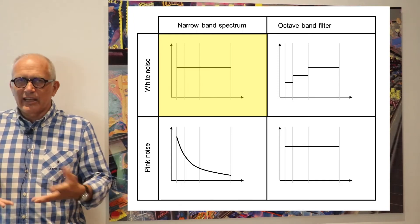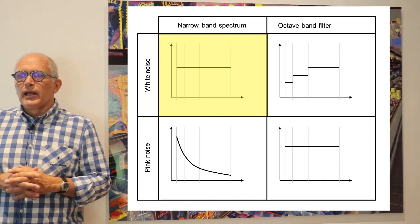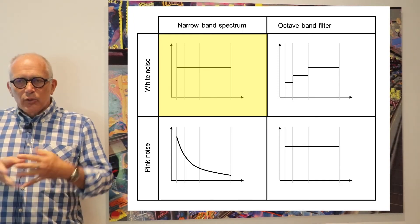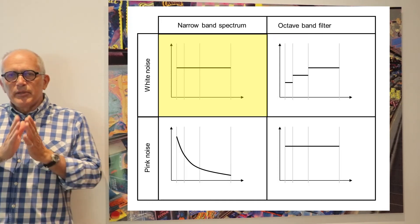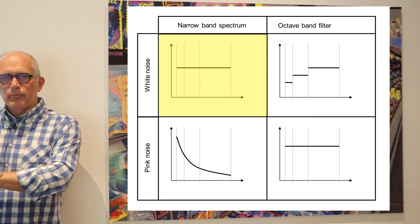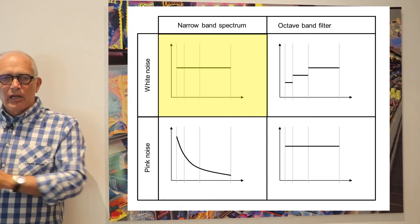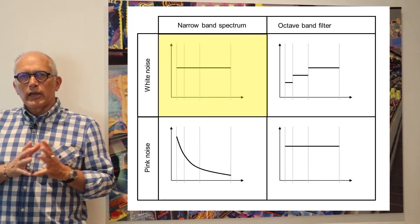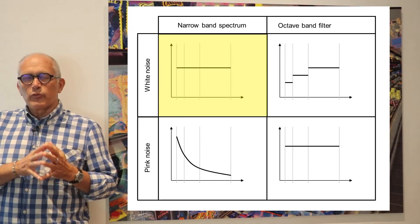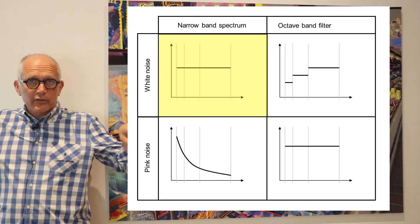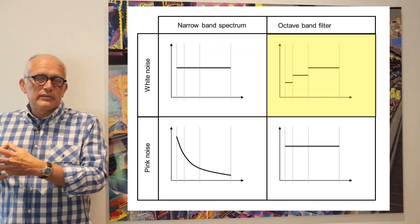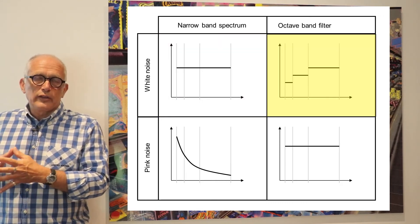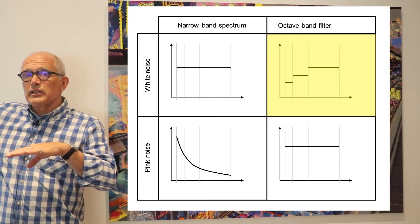Of course, it's never exact. And because the narrow band spectrum is flat and because the width of the successive bands increases, if you look at the narrow band spectrum of a white noise, you have a flat curve, but if you look at the octave band spectrum of a white noise, you have an increasing level.